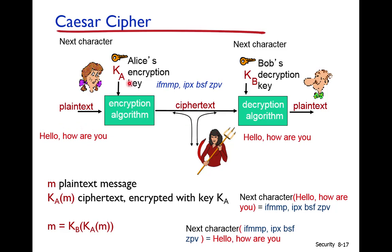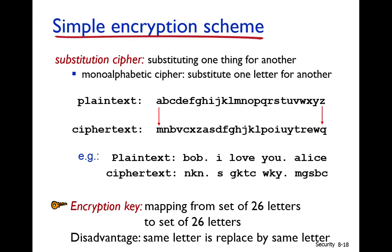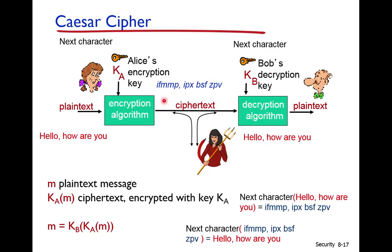One symmetric algorithm is the Caesar cipher. For example, the message 'Hello how are you' is encrypted using the key 'next character,' replacing each character with the next one in the alphabet. The message becomes 'IFMMP...' and so on. When Bob receives this, he decrypts it by replacing each character with the previous one, recovering the original message.